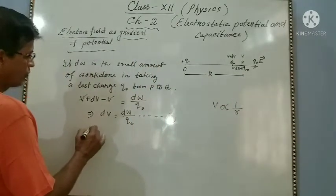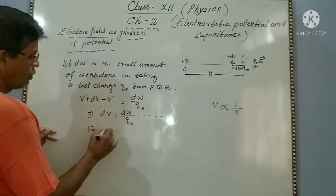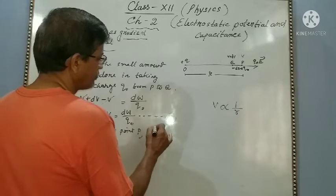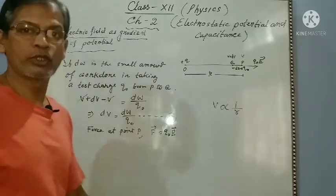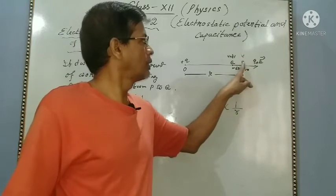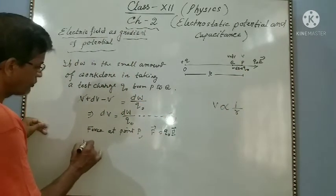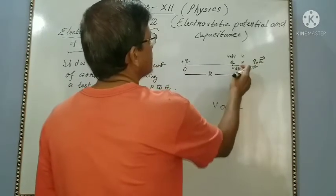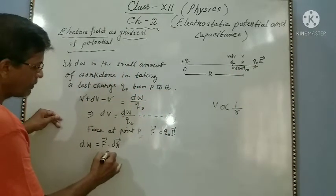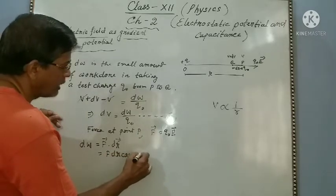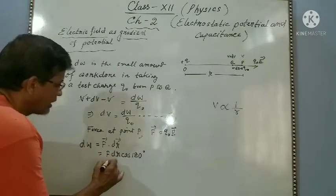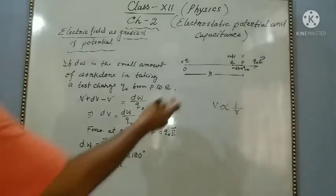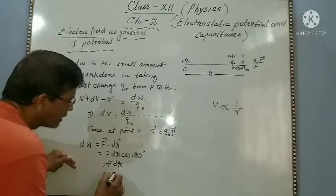If at point P the electric field is E, then the force on the test charge is F equal to Q naught times E. The small amount of work done to carry the test charge from P to Q is dW equal to F dot dr. The angle between force and displacement is 180 degrees, so cos 180 is minus 1, giving dW equal to minus F dr.